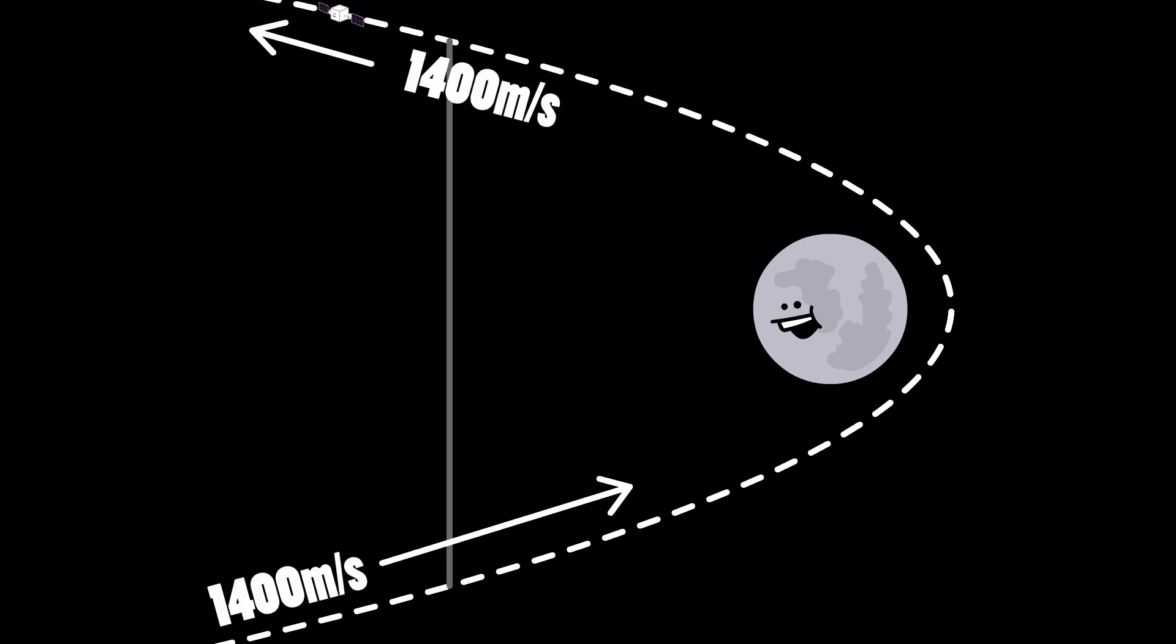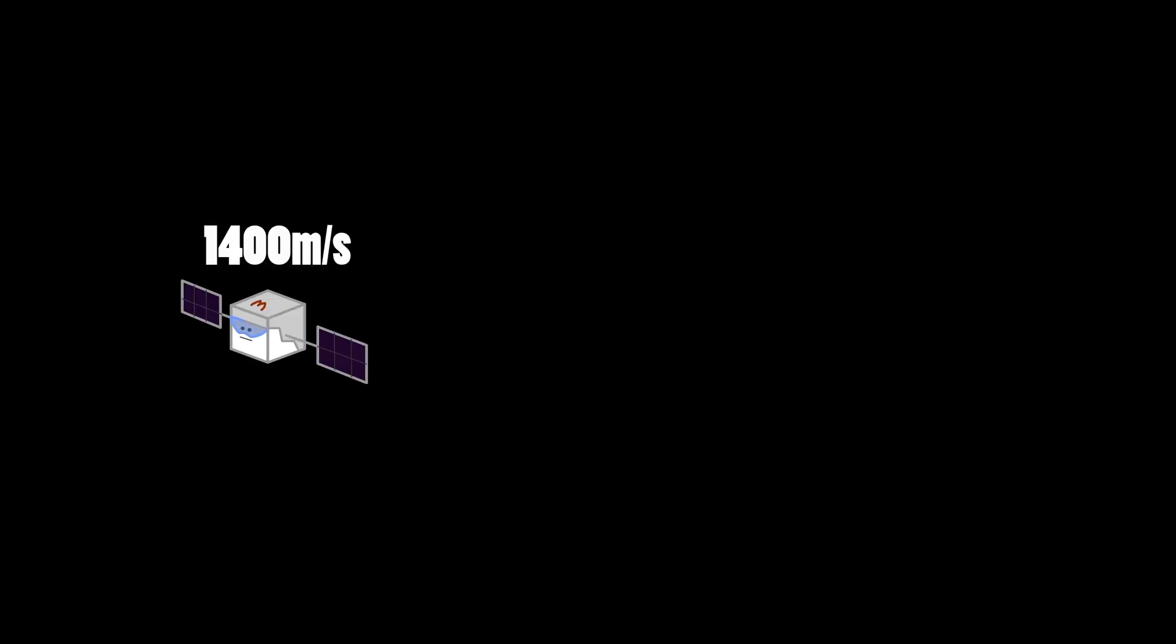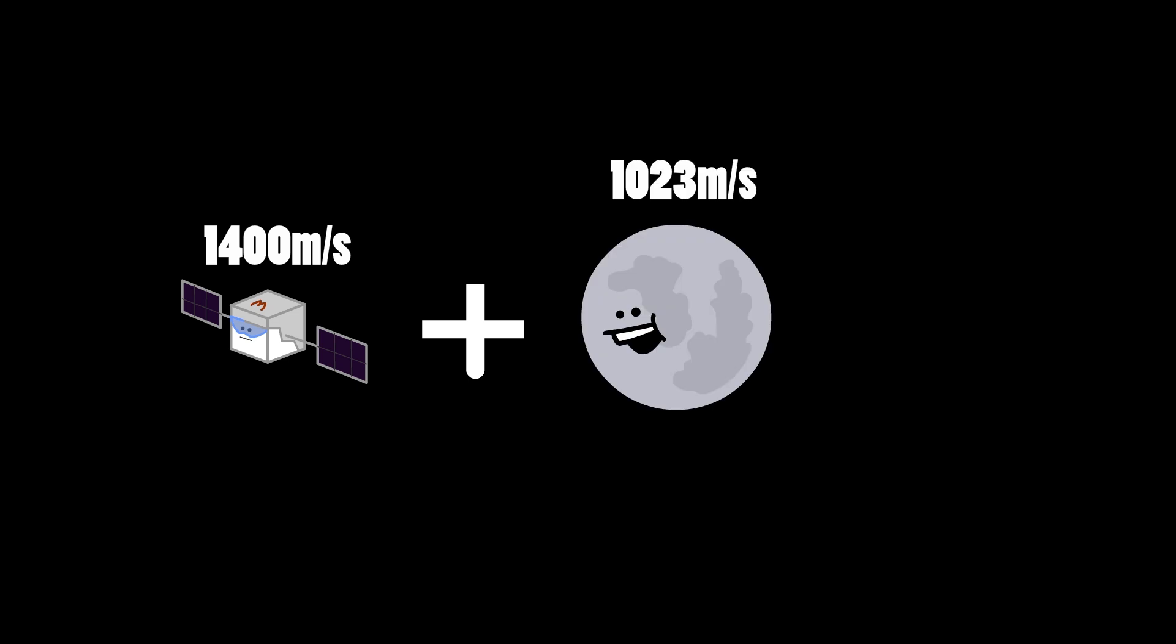If Stan entered the Moon's gravitational influence with an escape trajectory, he would leave the Moon just as fast as he approached it. The speed Stan left the Moon at, coupled with the speed of the Moon, is how fast Stan would now be going around the Earth and possibly leaving it.